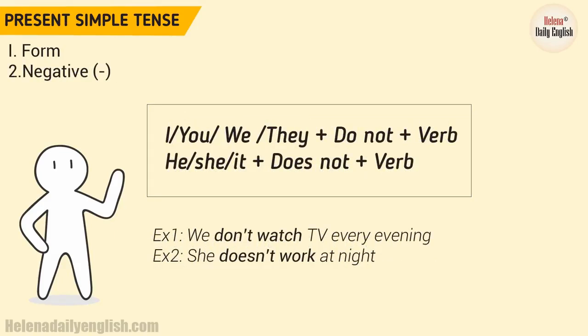2. Negative. I, you, we, they plus do not plus verb. He, she, it plus does not plus verb. Example 1: We don't watch TV every evening. Example 2: She doesn't work at night.